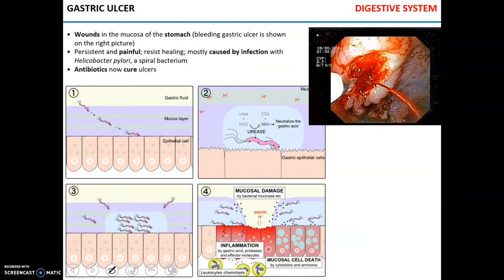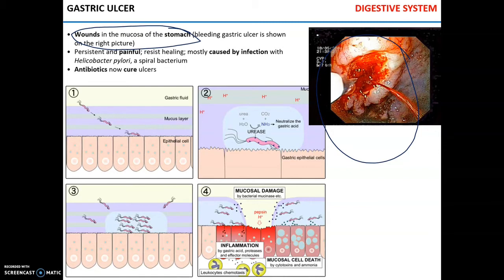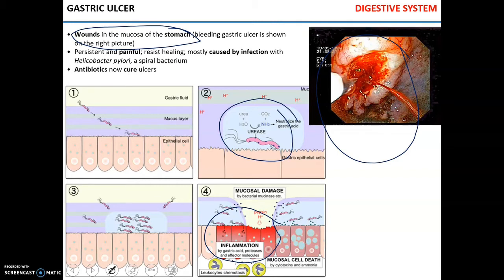One of the main pathologies of the stomach is a gastric ulcer — a wound in the mucosa of the stomach. Ulcers are persistent, painful, and usually resist healing. The causative agent is infection with the bacterium Helicobacter pylori, which neutralizes gastric acid, infects the epithelial cells of the gastric mucosa, and via the enzyme mucinase breaks the protective mucus layer, leading to exposure of the stomach mucosa to acid and pepsin. We know this definitively because antibiotics can cure the infection.